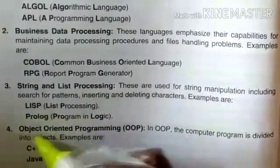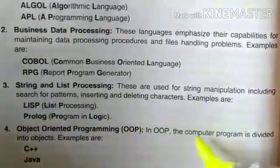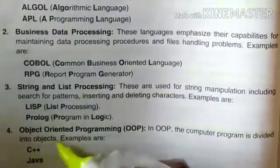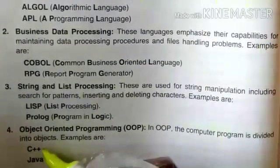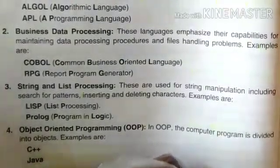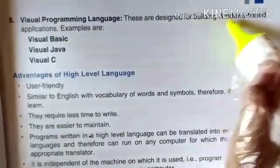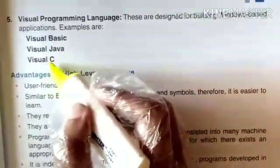Number 4: Object-Oriented Programming (OOP) — in OOP, the computer program is divided into objects. Examples are C++ and Java. Number 5: Visual programming languages — these are designed for building Windows-based applications. Examples are Visual Basic, Visual Java, and Visual C.